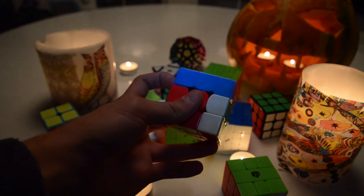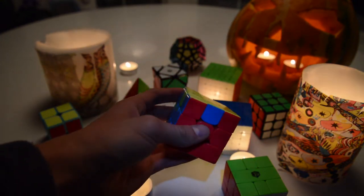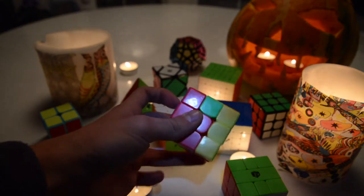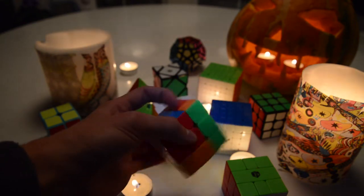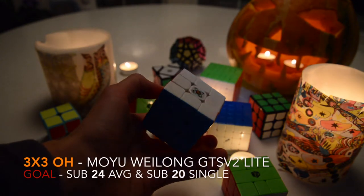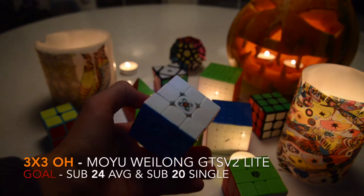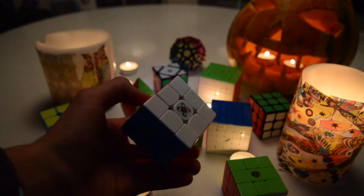Next up, 3x3 one handed. I'll be using the same Wurlong GTS version 2 magnetic from the cubicle.us and my goal is to get sub 20 average. If that's going to happen, probably also sub 20 single because I've been waiting for that to happen for a really long time.